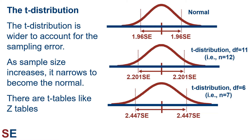When using normal distributions or t distributions to estimate population means from samples, it's best to think about the width of these distributions in terms of standard errors. In this figure, we can see the normal distribution at the top, where the middle 95% is within 1.96 standard errors of the mean. The bottom figure shows the t distribution for 6 degrees of freedom, which is a sample size of 7 values. In this situation, the middle 95% of the distribution is within 2.447 standard errors of the mean.